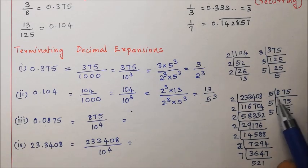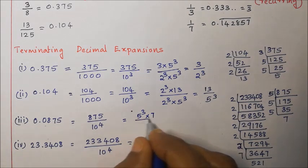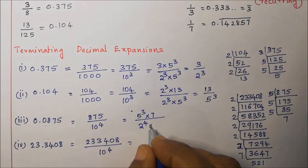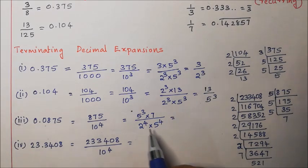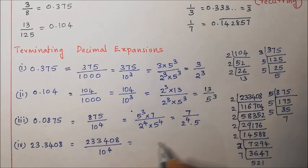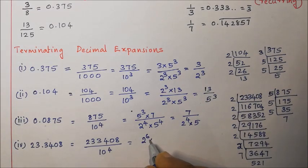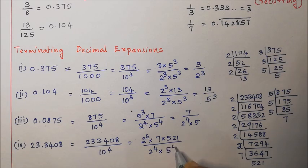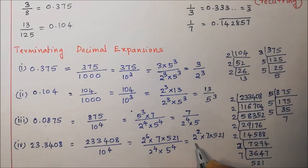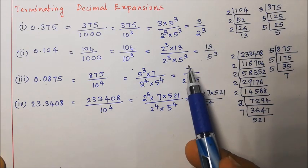Factors of 875 give us 5 to the power 3 into 7, divided by 2 to the power 4 into 5 to the power 4. Cancelling 5 to the power 3, we get 7 divided by 2 to the power 4 into 5. For the other number, we get 2 to the power 6 into 7 into 521 divided by 2 to the power 4 into 5 to the power 4. Cancelling, we get 2 to the power 2 into 7 into 521 divided by 5 to the power 4. So we have represented the decimal expansions as p by q.